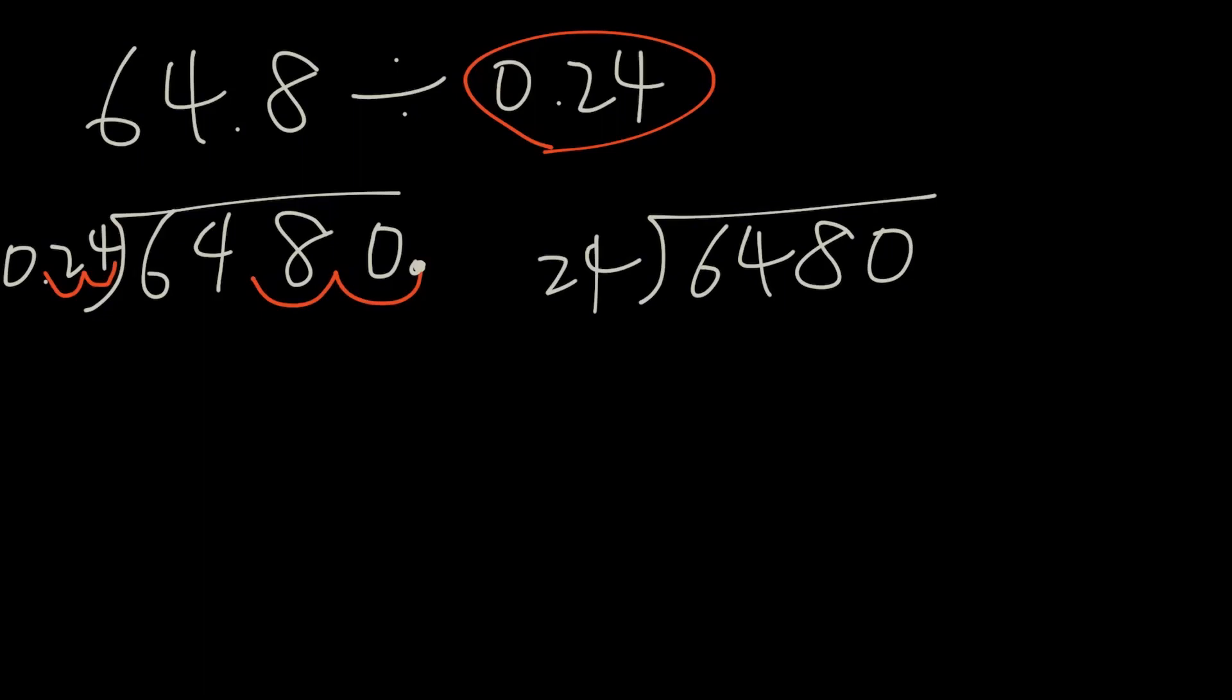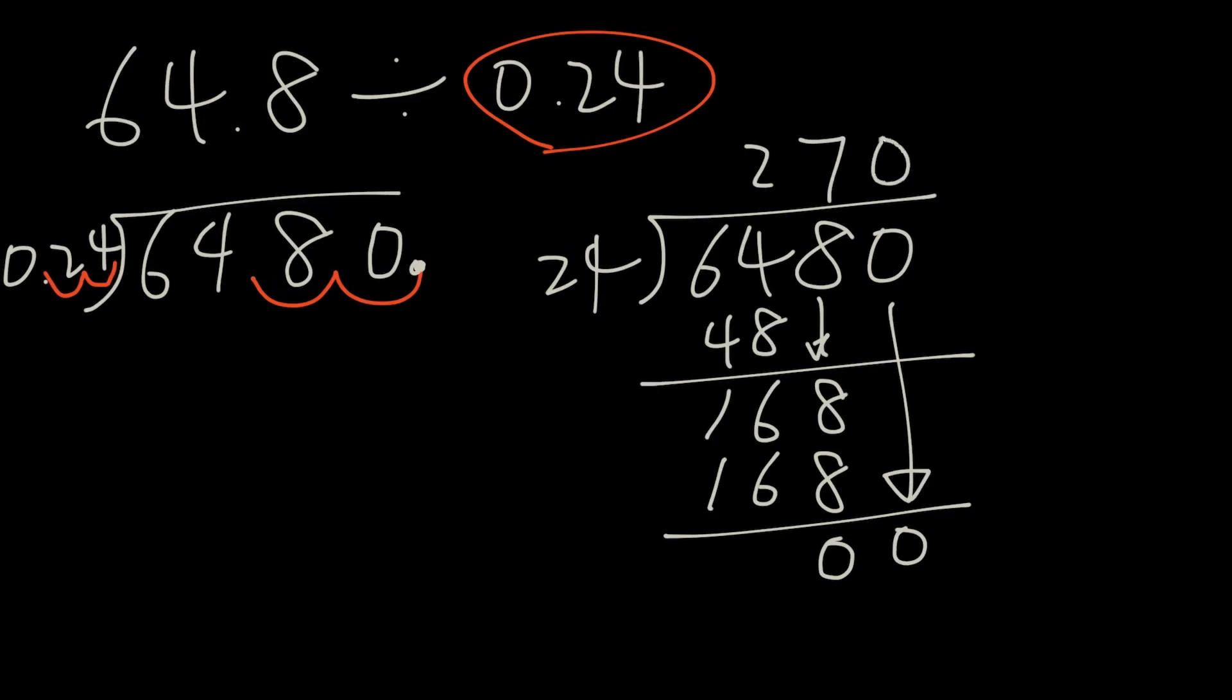Now we can solve this question with division. This will be 2, 48, 16 bring down the 8, 7, 168, 0 and we bring down the 0. So our final answer here is 270.